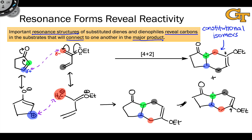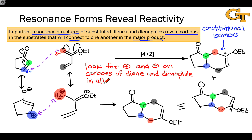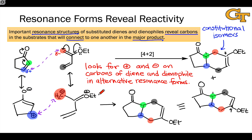This structure is identical to the second product we drew when exploring this issue at the outset. To summarize: the key thing to look for when deciding which regioisomer will be the major product in a Diels-Alder reaction is the positive and negative charges on the carbons of the diene and dienophile in alternative resonance forms. These charges are introduced by electron withdrawing and electron donating groups respectively, and it's those specific positions that will link up. Don't be distracted by the charges on the withdrawing and donating groups themselves, as these are incidental to the Diels-Alder reaction, which occurs within the four-atom and two-atom pi systems that link up to form the cyclohexene ring.